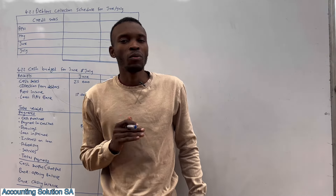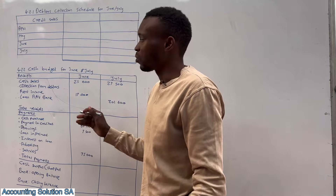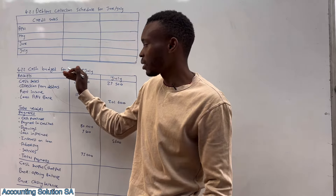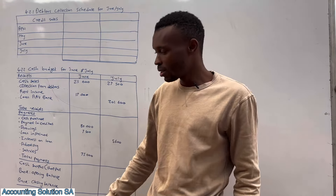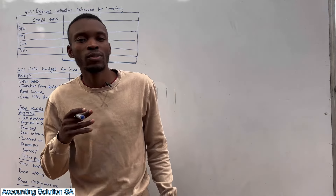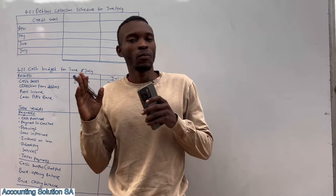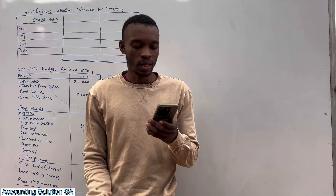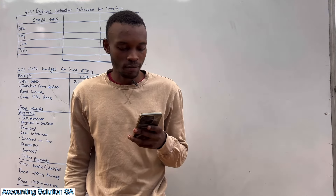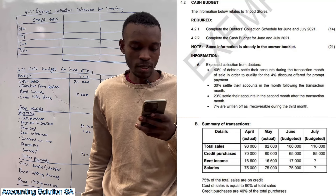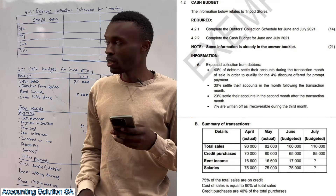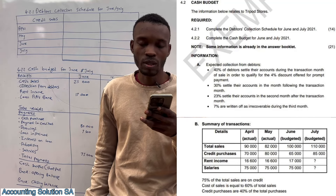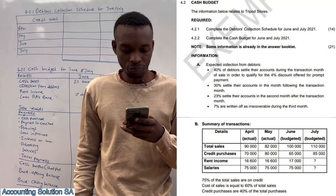In this video we are going to do a cash budget from scratch, so you will see how to complete a receipt, how to complete a payment, how to complete a balance at the end. Please stay tuned and watch until the end so that when you write your test you'll be ready. The question requires: number one, complete the data collection schedule for 14 marks; number two, complete a cash budget for June 2021.